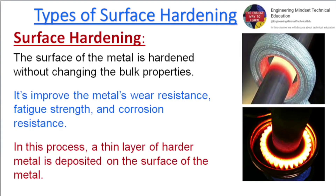For surface hardening, the surface of the metal is hardened without changing the bulk properties. It improves the metal's wear resistance, fatigue strength, and corrosion resistance. In this process, a thin layer of harder metal is deposited on the surface.